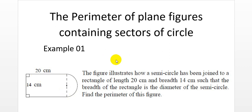Sometimes you get a sector or two semicircles connecting to a rectangle, a triangle, a square, or part of it. Basically, what you have to do is calculate the perimeter of each plane figure separately, then finally get the summation of all the perimeters of those plane figures, which will give the answer for the combined figure. This is very simple — you just need to understand what the given combined plane figure is, separate each figure, calculate the perimeters, and sum them.